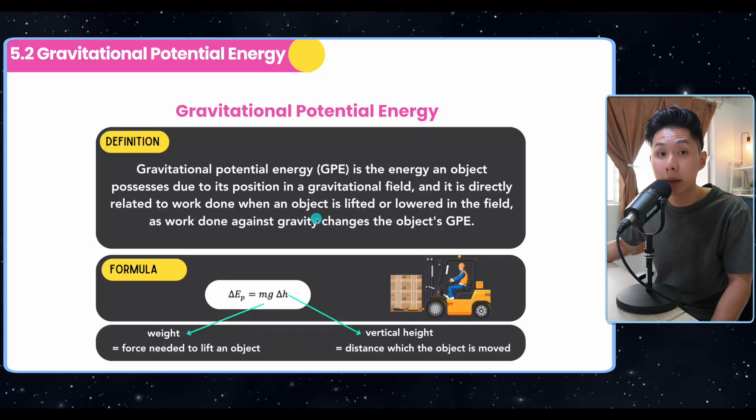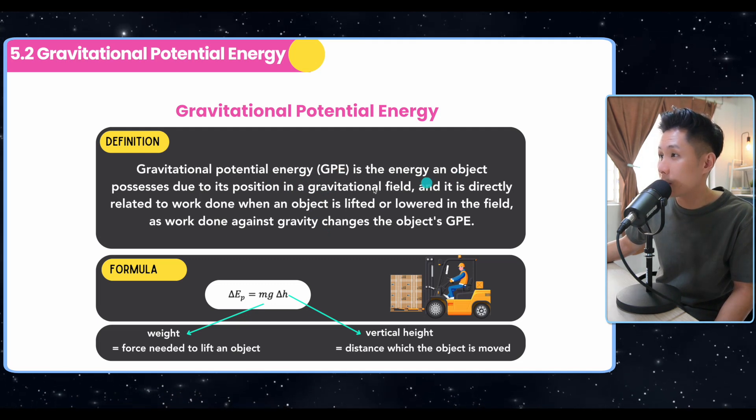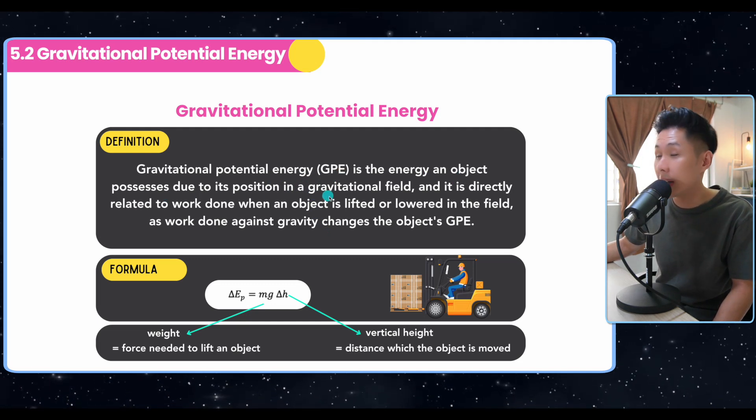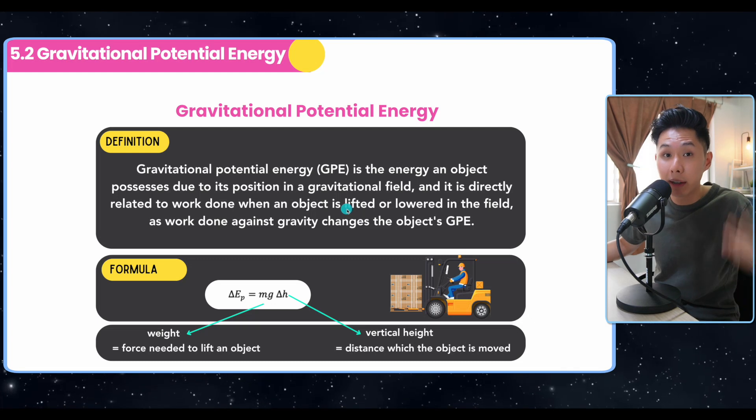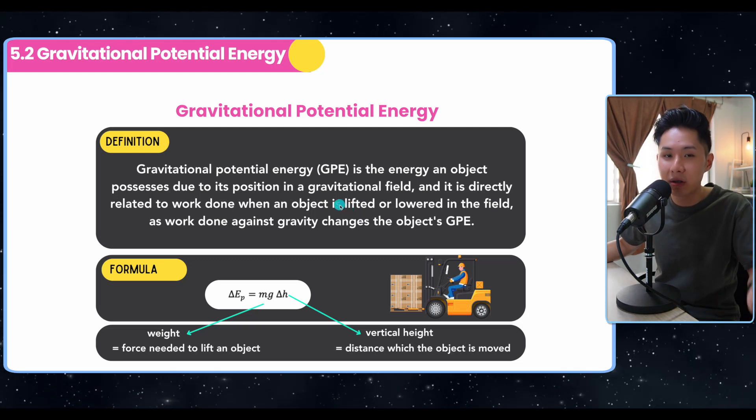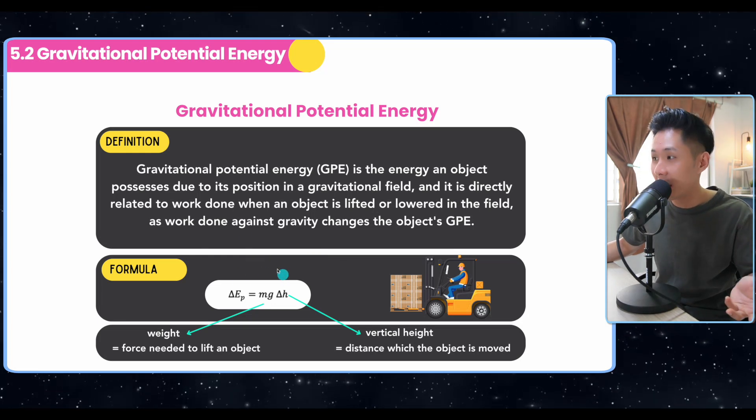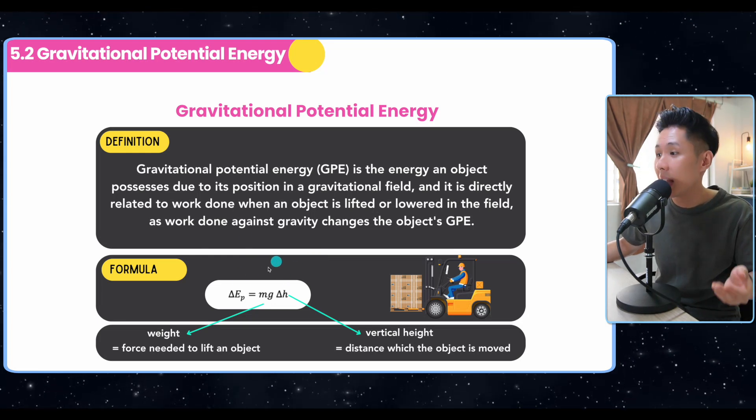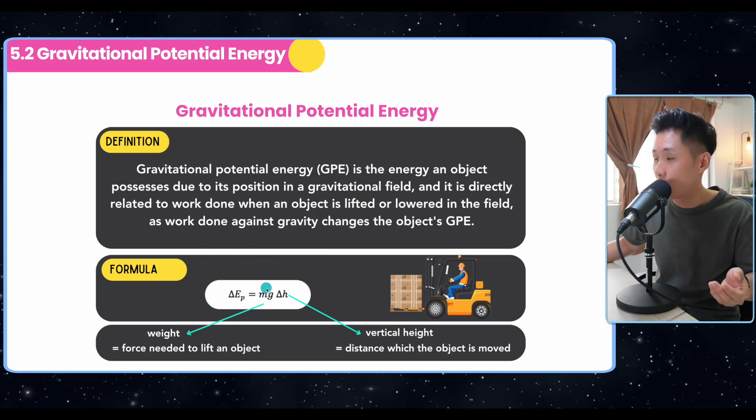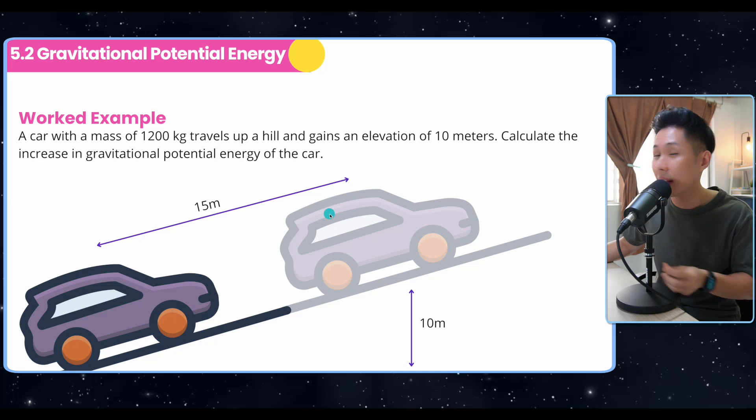Now let's look into some forms of energy. Let's start off with GPE. It's the energy an object possesses due to its position in a gravitational field. When the object is lifted higher, the GPE will change. When there's energy change, work done will also change. So when calculating GPE, that's the formula we learned in IGCSE physics: MGH. Mg is the weight, H is the vertical height. So vertical height is the keyword here.